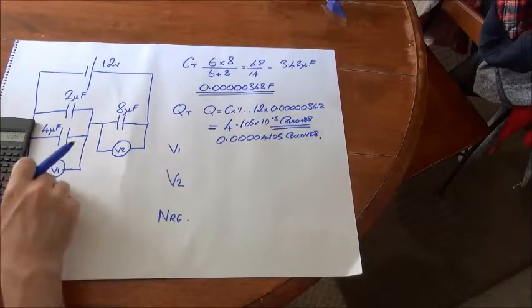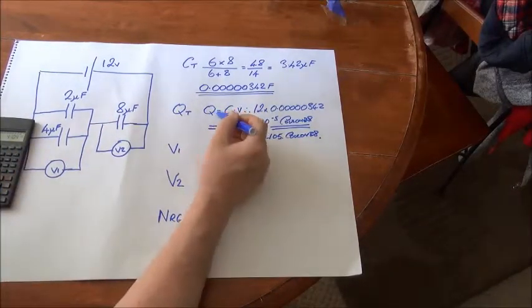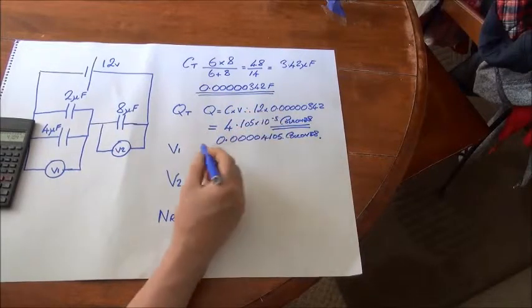To find the voltage V1, we need to rearrange Q equals C times V, so V equals Q over C.